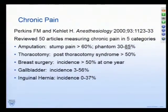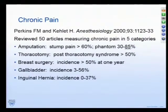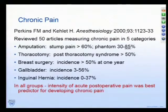Poor acute pain management is a risk factor for chronic pain. This is from Perkins and Kellett in 2000 — they looked at 50 articles and the incidence of chronic pain after high-risk surgeries. When they sub-analyzed the risk factors for developing chronic pain, the number one predictor was the intensity of acute postoperative pain. So when patients come into the hospital — for surgery, trauma, or an acute pain flare — we need to address it quickly and well, or they may be set up for years of pain.